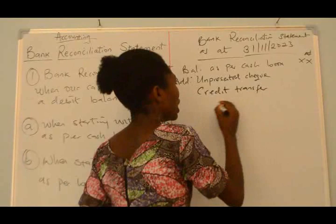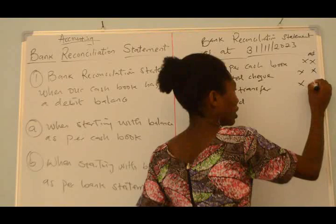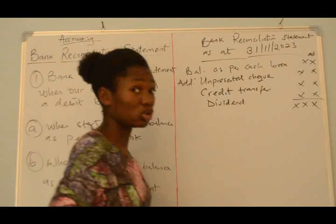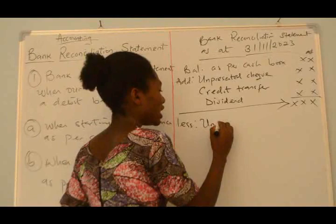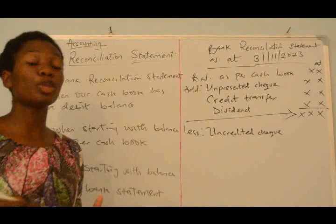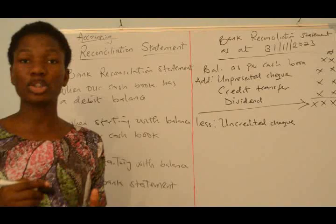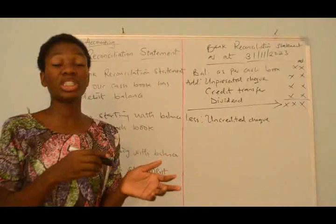We'll also be adding our dividend, which is our profit that was paid for a certain investment. Then we subtract. Un-credited check refers to those checks that you receive from your customers or debtors — they paid you a check, but you are yet to cash it at your bank, although the business has already recorded it in its account. So it was not reflecting in the bank statement, and for that reason we will be subtracting our un-credited check.